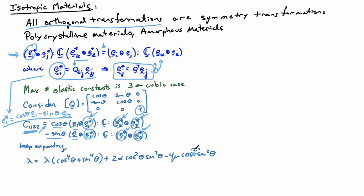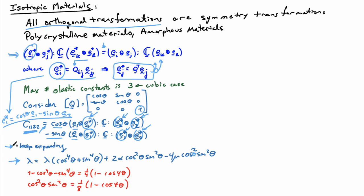This interrelationship depends on theta, the angle of rotation. But I can look up a few trigonometric identities to reduce it. Specifically, one minus cosine-fourth minus sine-fourth equals one-quarter times (one minus cosine(4*theta)), and cosine-squared times sine-squared equals one-eighth times (one minus cosine(4*theta)). Plugging those into the relationship obtained from the expansion, what I find is that alpha equals two mu plus lambda, independent of theta. So I have this interrelationship between the three cubic constants, meaning there are really only two independent constants when I apply this symmetry element.